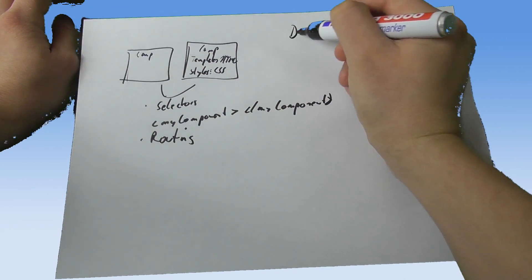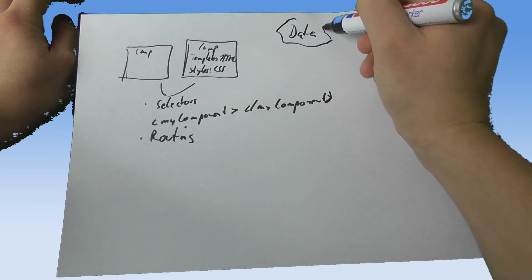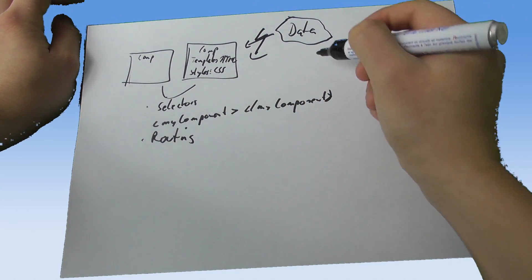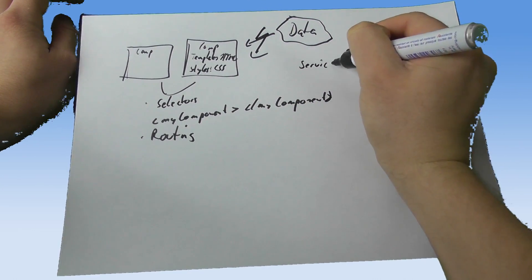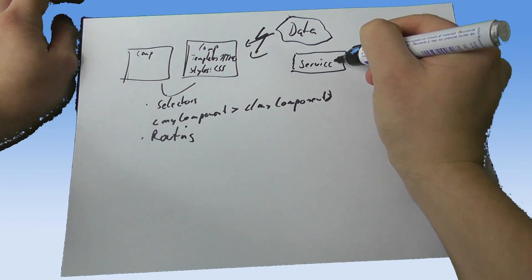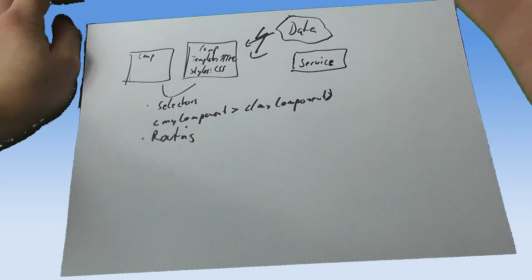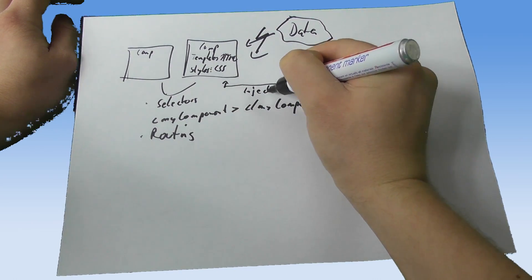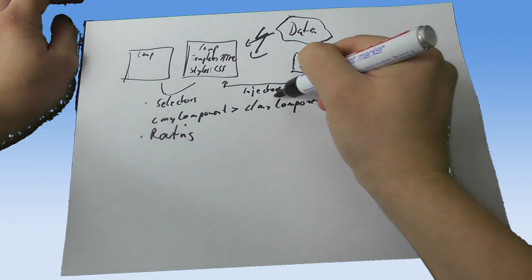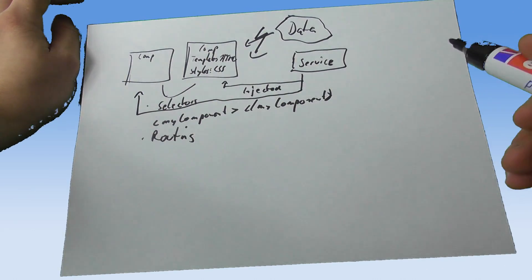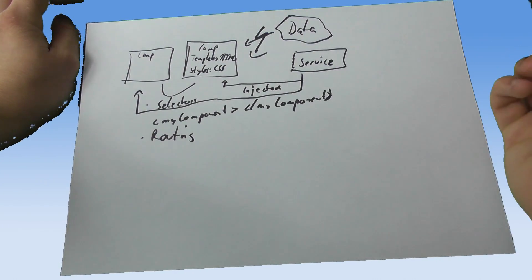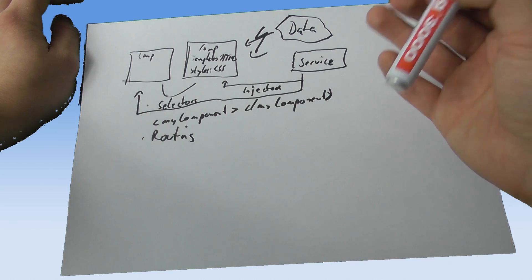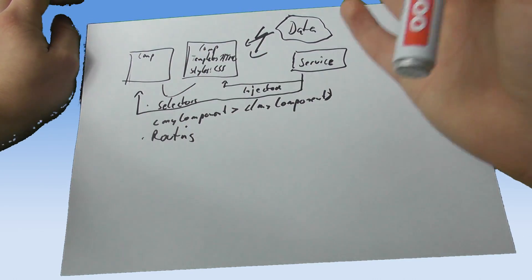Now if our components need to for example access some data, they will not do this directly but instead they will use a service, which is another Angular-specific terminology or part of the Angular philosophy. This service can then be actually injected into classes so that those classes can then access the methods defined in the service, which for example may get data from a RESTful server or from some other data source.